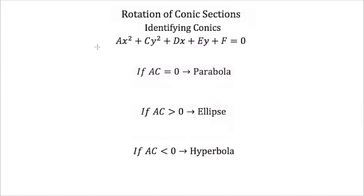There's an easier way to identify a conic section without completing the square. This easier method is using the discriminant, and it's similar to the discriminant on a quadratic equation. Here I have the general form of a conic section, written as ax squared plus cy squared plus dx plus ey plus f equals 0. If I take the number a — the coefficient of our x squared term — and multiply it by c, the coefficient of my y squared term: if a times c equals 0, you're looking at a parabola; if it's greater than 0, you're looking at an ellipse; and if it's less than 0, you're looking at a hyperbola. A circle will also give a times c greater than 0.